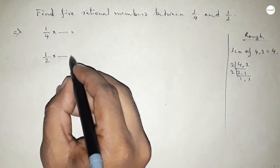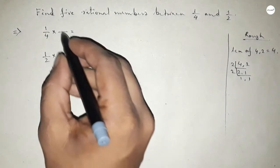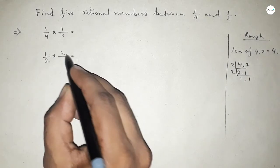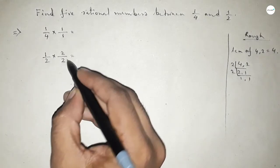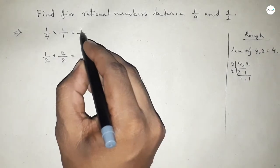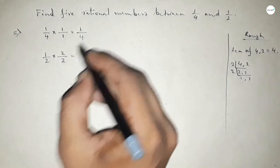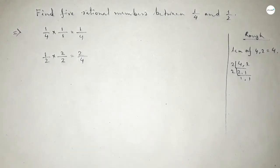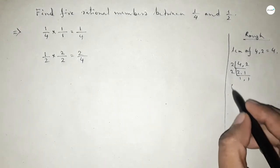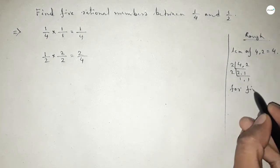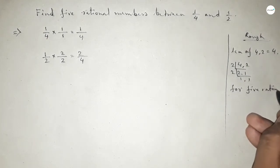Now, what should we multiply here and here to get denominator 4? If we put 1 here and 2 here, then this is 1 over 4 and this is 2 over 4.